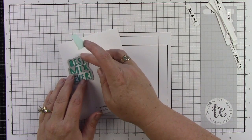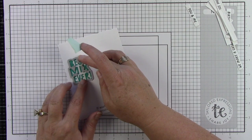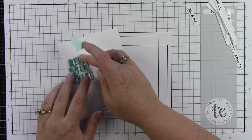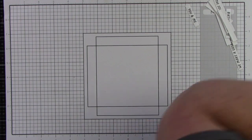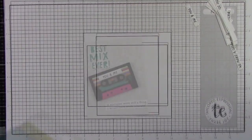Here is that coordinating die for the Best Mix Ever - again this is an add-on you can get with the kit. Then I'm just going to use a paper trimmer to trim out the other sentiment that we stamped.